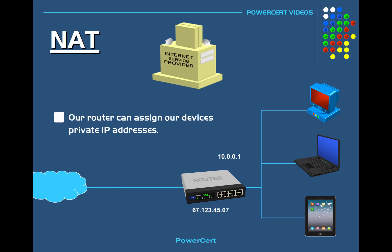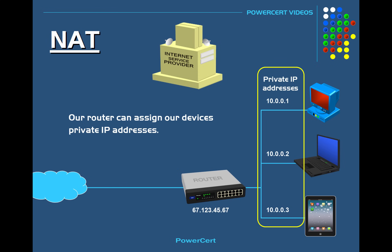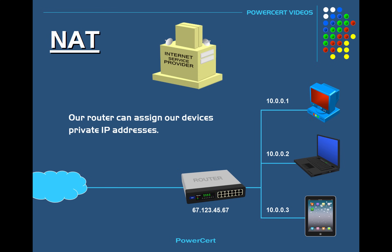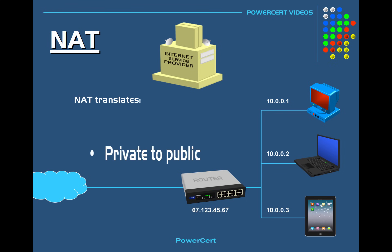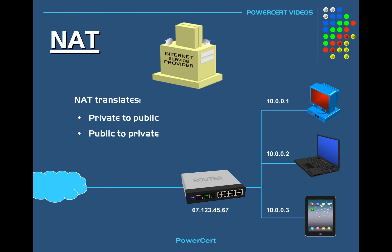Instead, we can have our router assign the devices inside our home or business private IP addresses. When our devices need to access the internet, their private IP address will be translated by NAT in the router to the one public IP address that we have been given. This is what NAT does — it translates a set of IP addresses to another set of IP addresses. Not only does it translate private to public, but it also translates public to private. If a computer out on the internet wants to communicate with a computer on a private network, then the public IP address needs to be translated by NAT to the private IP address for that computer.